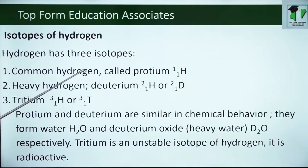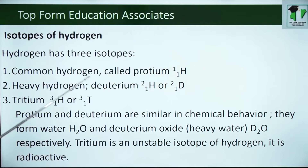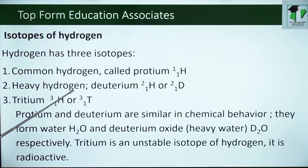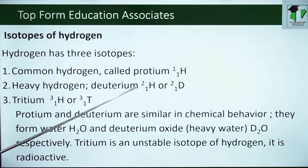Isotopes of hydrogen. Hydrogen has three isotopes. Common hydrogen called protium, meaning that it has a mass number of 1 and atomic number of 1. Heavy hydrogen or deuterium has a mass number of 2 and an atomic number of 1. And lastly tritium having a mass number of 3 and atomic number of 1. Isotopes are elements that have the same atomic number but different mass numbers.